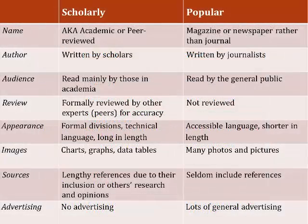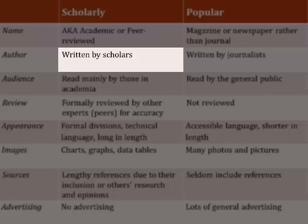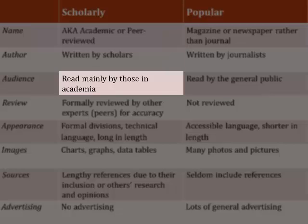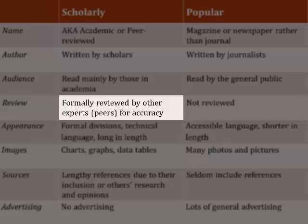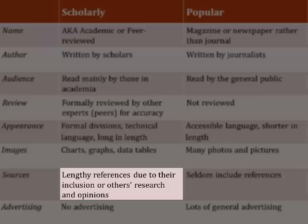Scholarly publications, also referred to as academic or peer-reviewed, are generally written by professors and scholars to be read by other people in academia. They also undergo a peer review process, where other experts check for accuracy before publication. These articles will be lengthy with formal divisions and technical language that can be tricky to understand. They will also have many references listed in a bibliography at the end, since scholarly work incorporates and builds on existing research.